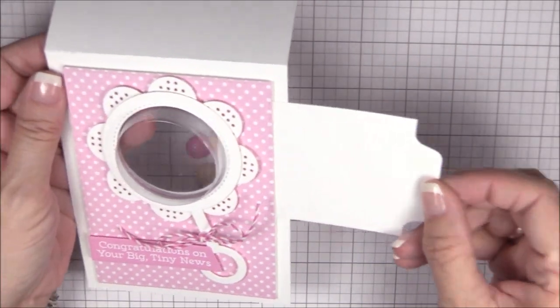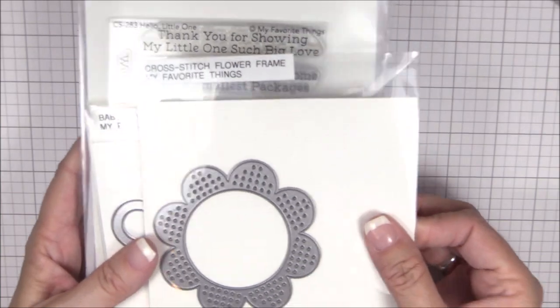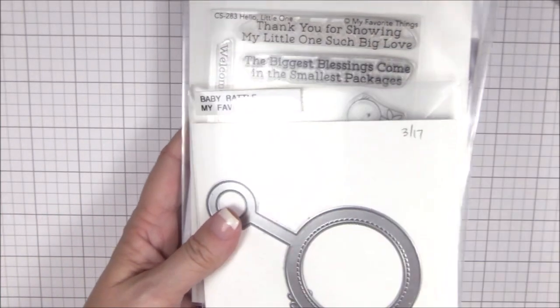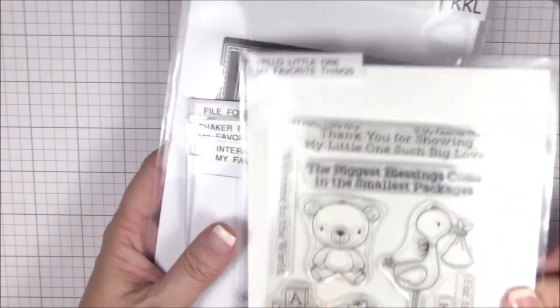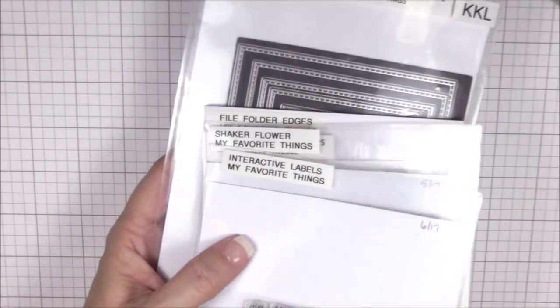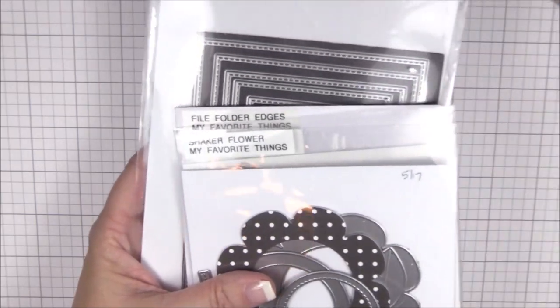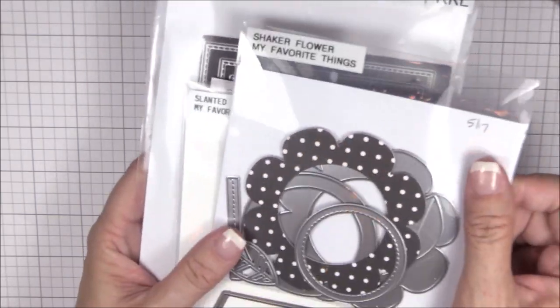I made the flower card earlier this month using the new cross stitch flower die-namics, so I thought I'd try the same slider technique with the baby rattle die-namics. I also use the hello little one stamp set, the interactive label stamp set, the shaker flower die-namics.